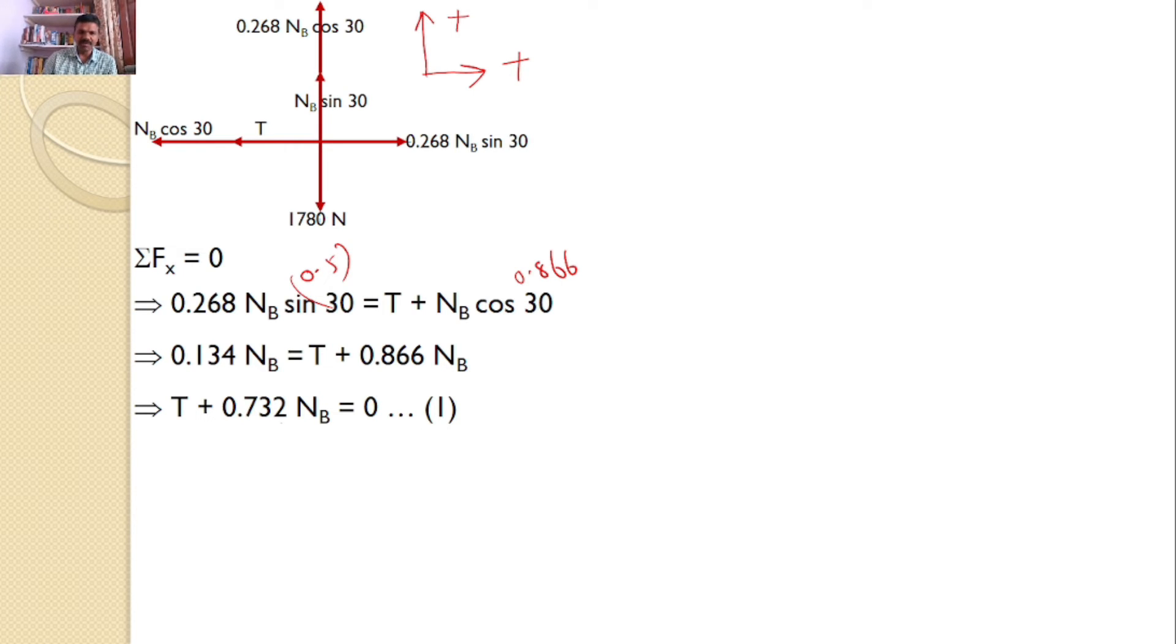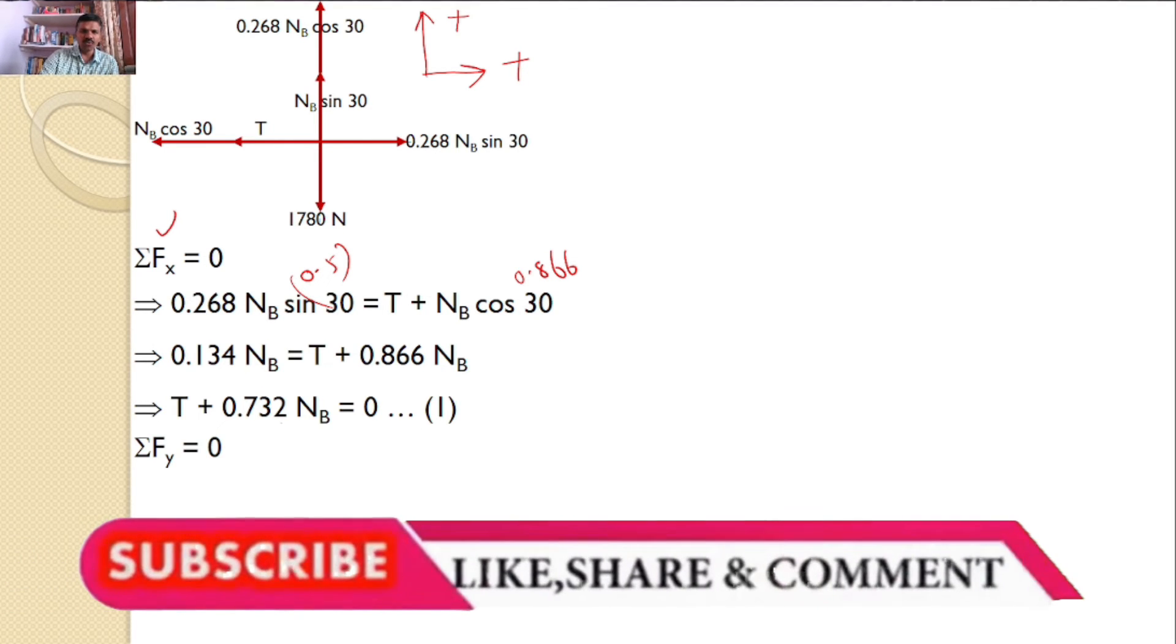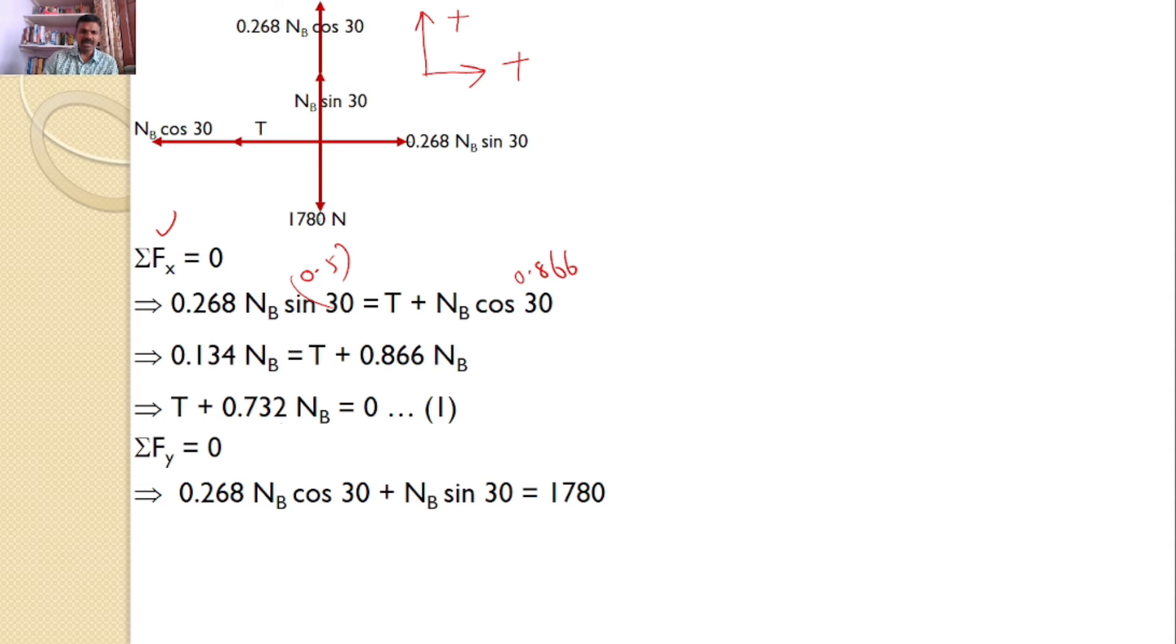Similarly, I will consider sigma Fy = 0. Now there are two forces acting in the positive direction: 0.268 NB cos 30 + NB sin 30 = 1780. After simplification, cos 30 is 0.866 and sin 30 is 0.5. So, after simplification, you will get 0.732 NB = 1780, or NB = 2431.69 N.